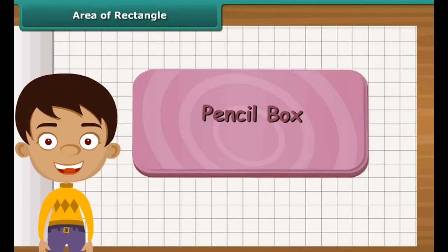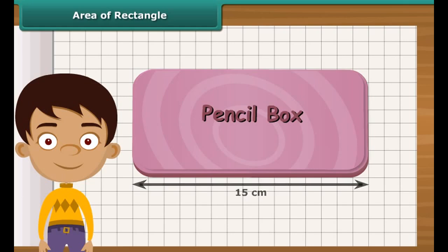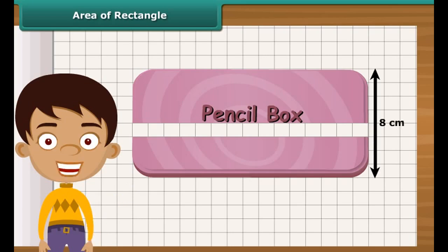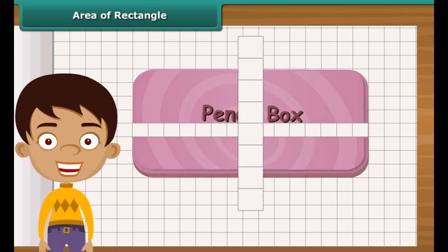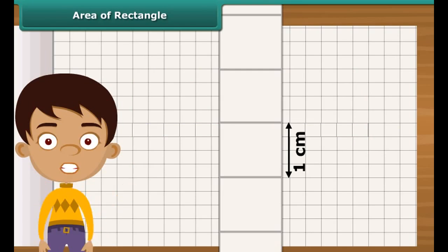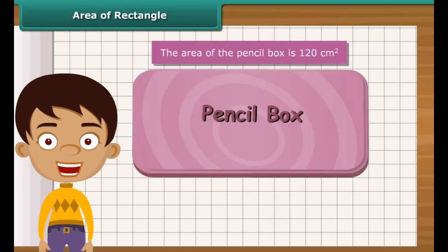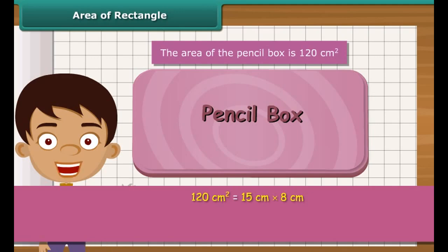Let us find the area of a rectangle by counting squares. Take a rectangular pencil box and place it on squared paper. The length of the box is 15 centimeters — arrange 15 squares of side 1 centimeter along its length. The breadth of the box is 8 centimeters — arrange 8 squares along its breadth. Altogether, 120 squares have been arranged, meaning the area of the pencil box is 120 square centimeters, which is 15 centimeters multiplied by 8 centimeters.